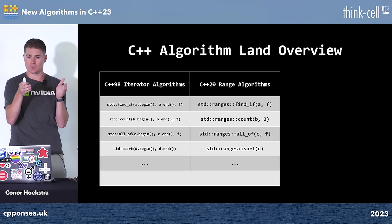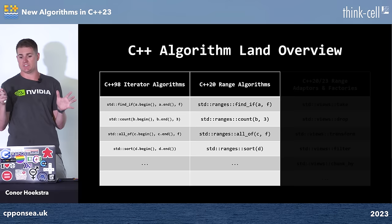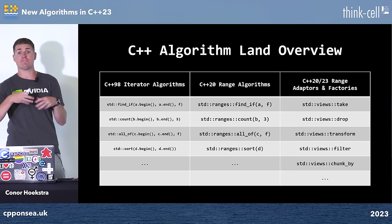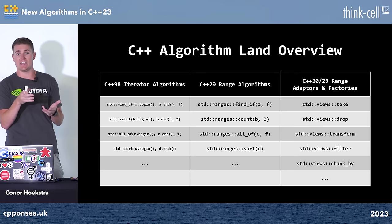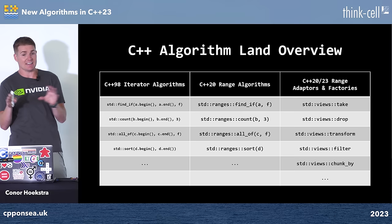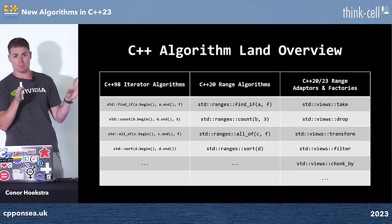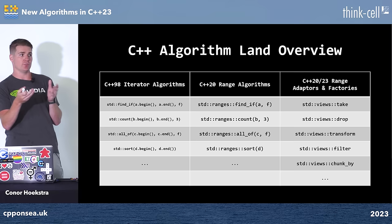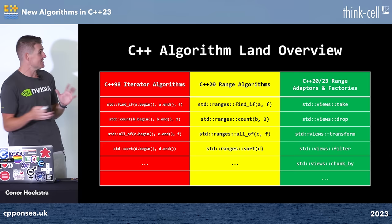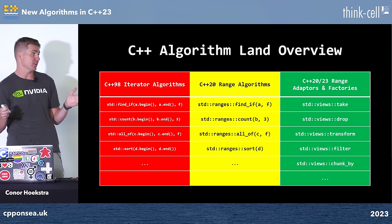The third vertical — the one we're focusing on today — is the C++20 and C++23 ranges. Technically, the standard calls these range factories and range adapters. Factories produce things like iota and repeat. Adapters like transform and filter adapt your sequence. I loosely call all three of these 'algorithms,' but in ISO standard speak, only the first two verticals are algorithms; the third is range adapters and factories.